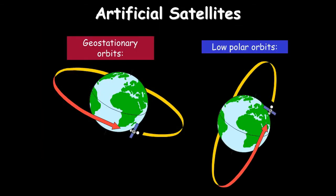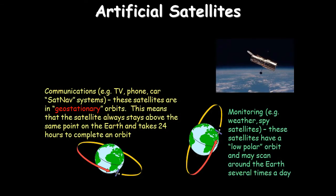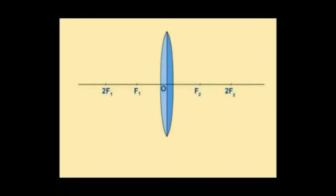Two types of artificial satellites: geostationary and low polar orbit. Geostationary satellites orbit above the equator and take 24 hours to complete their orbit, so they always appear above the same point — very useful for communications and why satellite dishes always point to the same spot in the sky. Monitoring satellites in low polar orbit fly closer to Earth, scanning the surface several times a day for weather, spying, and other uses.